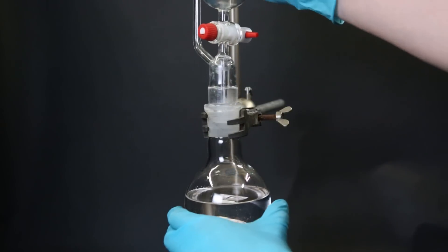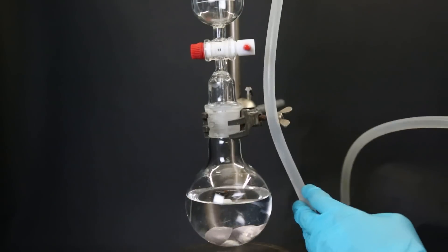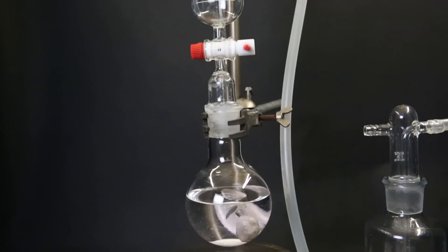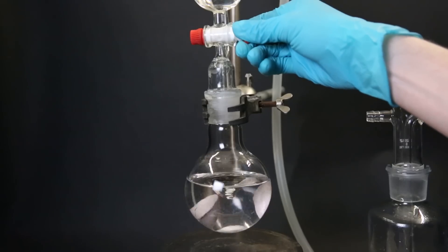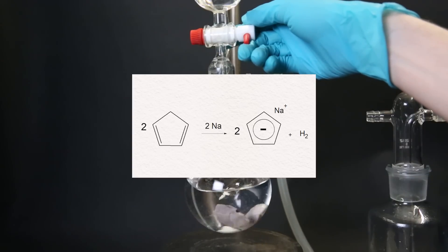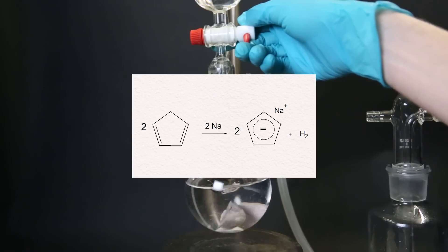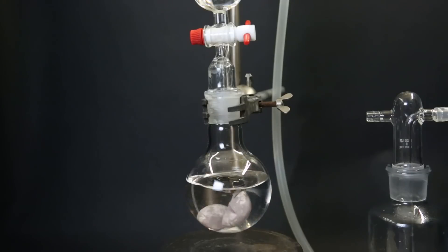I then attach a dropping funnel and a gas washing bottle. With the gas washing bottle, we again prevent air from destroying the product, but we can also track the progression of the reaction because hydrogen gas will be released. So to the dropping funnel, I add in about 31 mls of cyclopentadiene. I then slowly add it to the flask. In this reaction, the sodium metal will react with the cyclopentadiene to form the sodium cyclopentadienide salt. As the reaction progresses, the solution will take on a dark brown to red color, and we can track the production of the salt by seeing hydrogen gas bubble through the gas washing bottle.